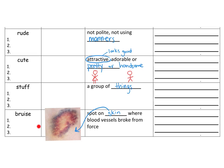Make sure, now that we're done with this page, that all of your words are written three times, that you've drawn your pictures, that all of your word definitions are written in, and that all of your sentences are here. They should have a capital letter and punctuation, and the word underlined. That's all for page three.